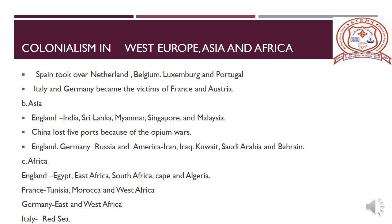We learn colonialism in West Europe, Asia and Africa. Western European countries expanded their colonies. Spain got control over Netherlands, Belgium and Luxembourg. France captured some provinces of Spain. France and Austria colonized Germany and Italy.